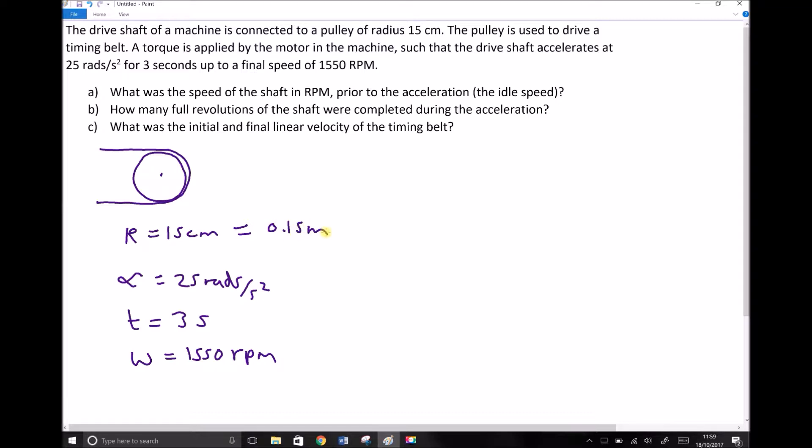Alpha is in radians per second squared and you'll recall from the earlier video that that's already the SI units of acceleration so we don't need to change that. And our time of 3 seconds is also in SI units.